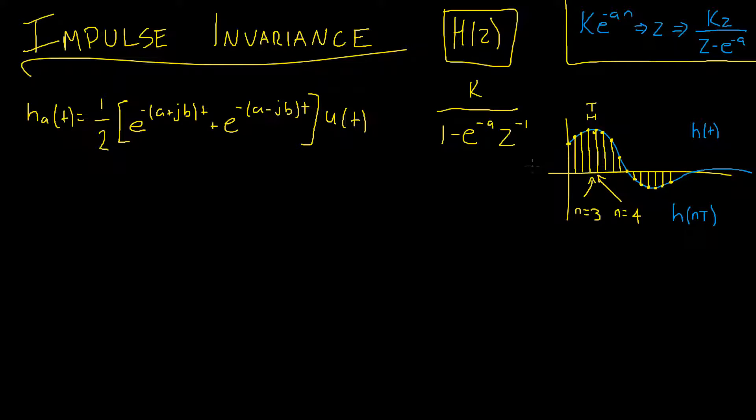Secondly, let's quickly note that the impulse invariance method is essentially making the substitution nt, where t is our sampling period, for our continuous time t in our analog filter, and n is simply our iterator for which sample we're currently looking at.